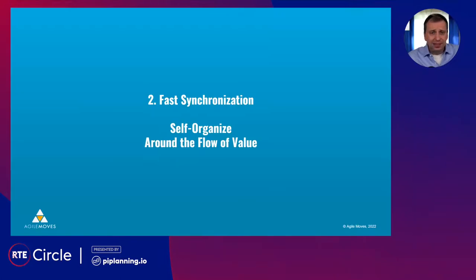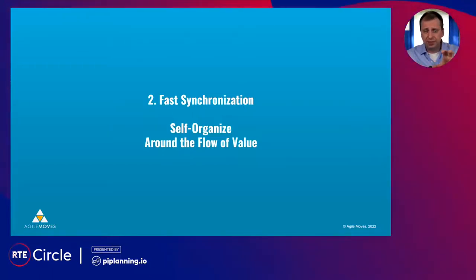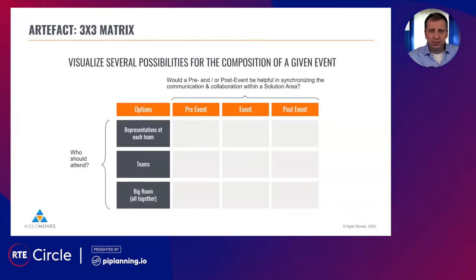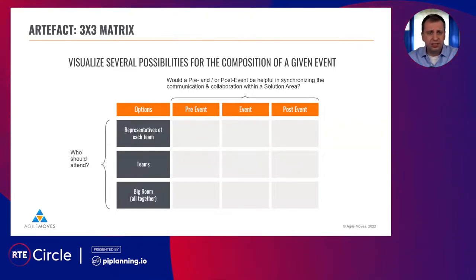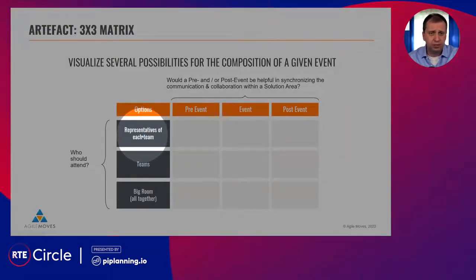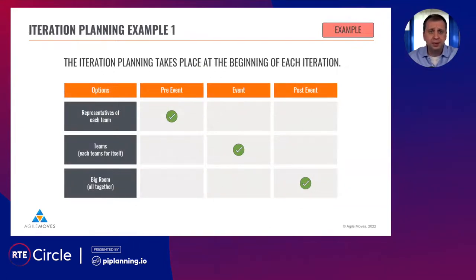The second aspect is fast synchronization. If we set up a solution area with two to four teams and synchronize fast right from the beginning, it's usually not much effort to agree on a new aligned understanding of an objective if you want to change something. For event synchronization within a solution area with four teams, we use a three-by-three matrix: for each Scrum event — planning, daily, review, retro — we think about what could be a pre-event, the event itself, and a post-event, and who takes part.